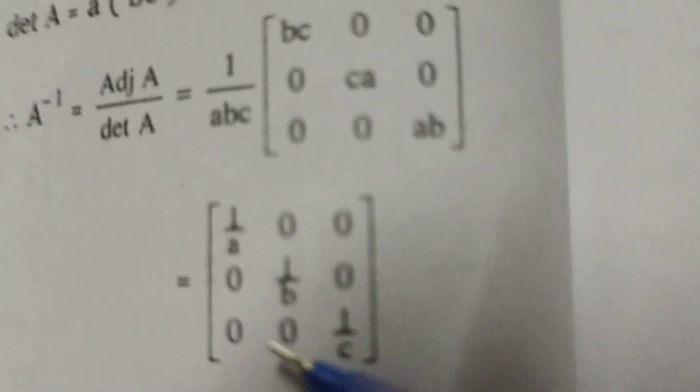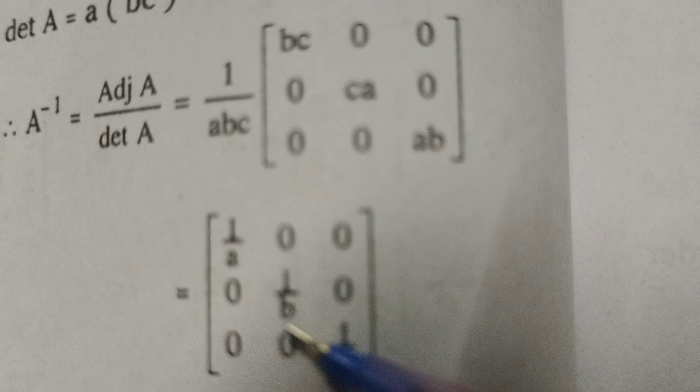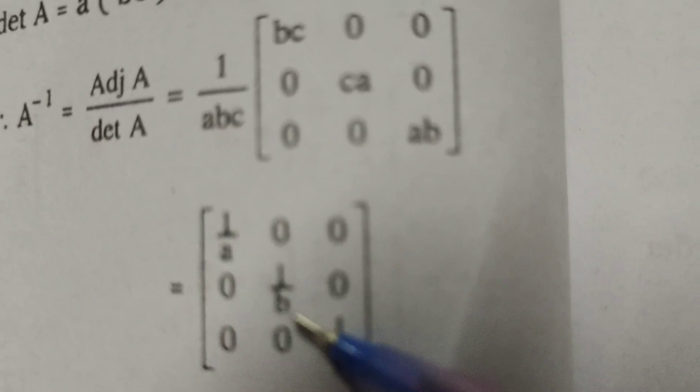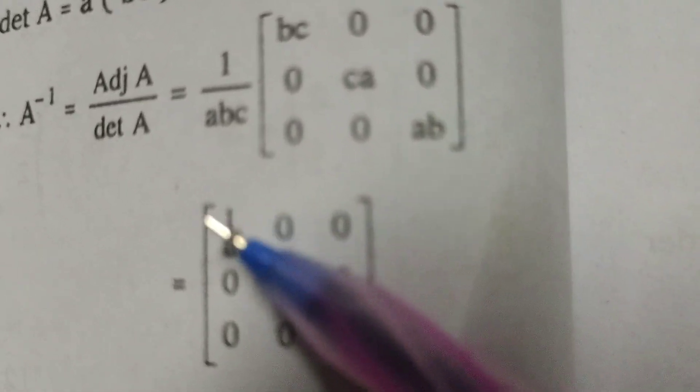ca by abc, that is 1 by b. 0 by abc, that is 0. And again 0 by abc, 0. 0 by abc, 0.